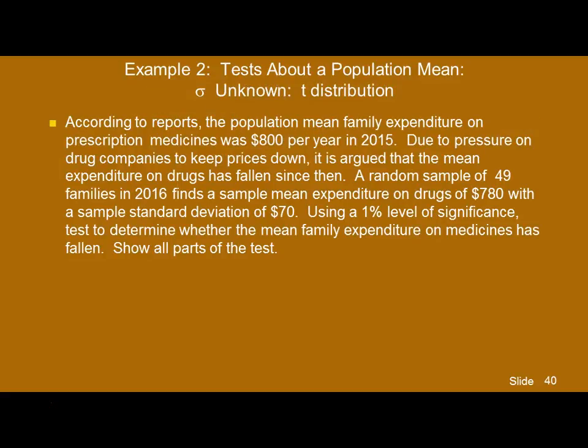Let's do a problem. According to reports, the population mean family expenditure on prescription medicines was $800 a year in 2015. Due to pressure on drug companies to keep prices down, it's argued that the mean expenditure on drugs has fallen since then. A random sample of 49 families in 2016 finds a sample mean expenditure on drugs of $780, with a sample standard deviation of $70. Use a 1% level of significance to test whether the mean family expenditure has fallen.